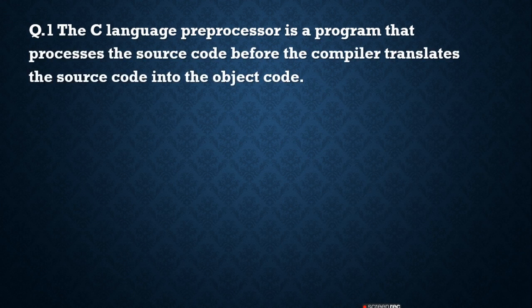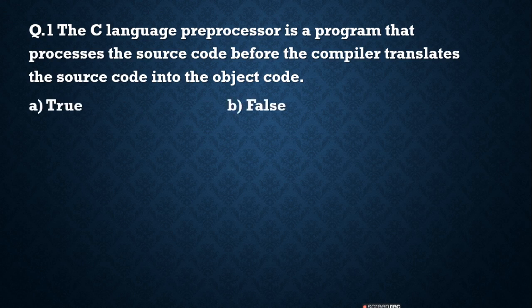Let's see the first question. The C language pre-processor is a program that processes the source code before the compiler translates the source code into the object code — true or false? It is covered in the definition itself. So the answer for this question is true. The C language pre-processor is a program that processes the source code before the compiler translates the source code into the object code.